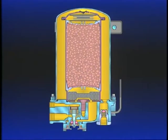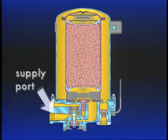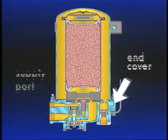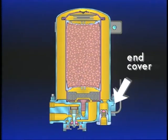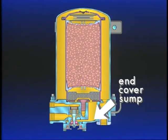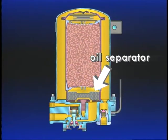Before we take a closer look at the air dryer's role, let's examine its main components. The air dryer includes the supply port, end cover, end cover sump, and oil separator.